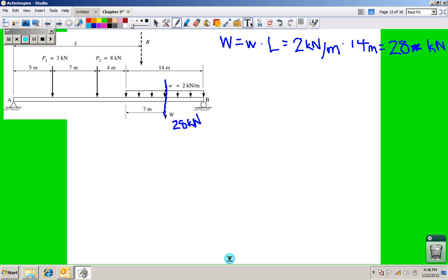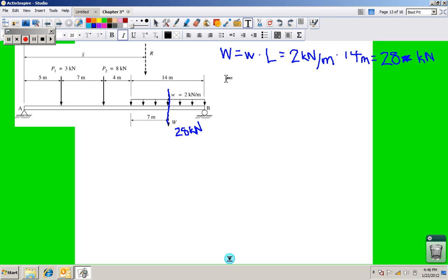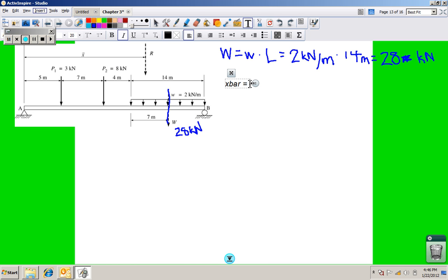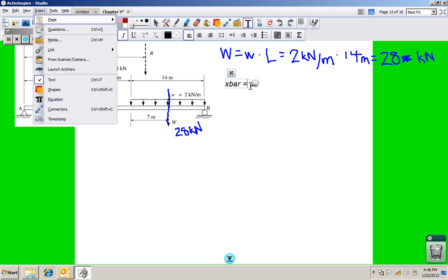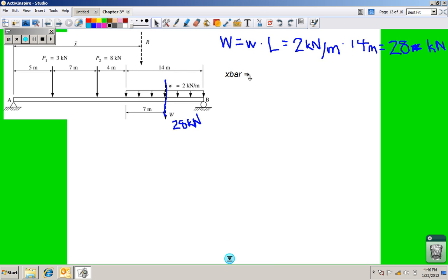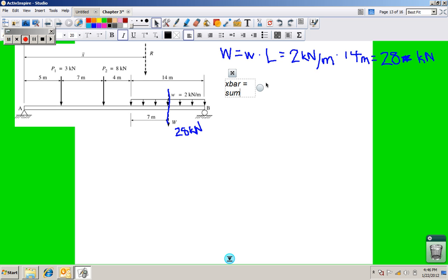So now let's look at what that's going to look like. We say that x bar is equal to the sum of the moments about A, and all that's divided by R.